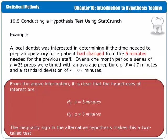Let's look at an example. A local dentist was interested in determining if the time needed to prep an operatory for a patient had changed from 5 minutes needed for the previous staff. Over a 1 month period, a series of 25 preps were timed with an average prep time of 4.7 minutes and a standard deviation of 0.5 minutes. We look for key words in the statement. The phrase 'had changed' doesn't say changed for the positive or negative — it just says changed. So it's just looking for a difference, whether that be positive or negative. In that case, we're going to use the not-equals sign in our alternative hypothesis.